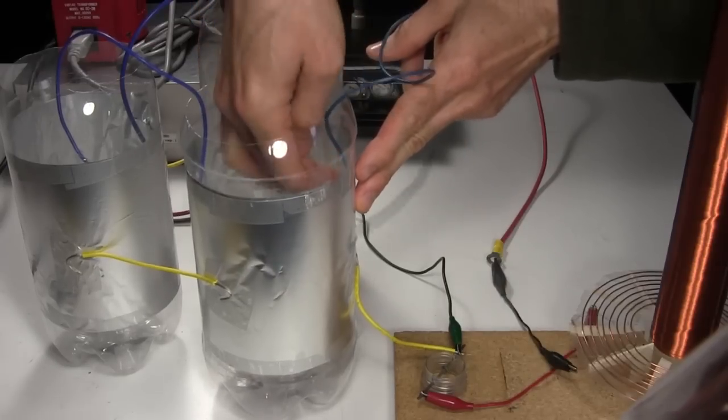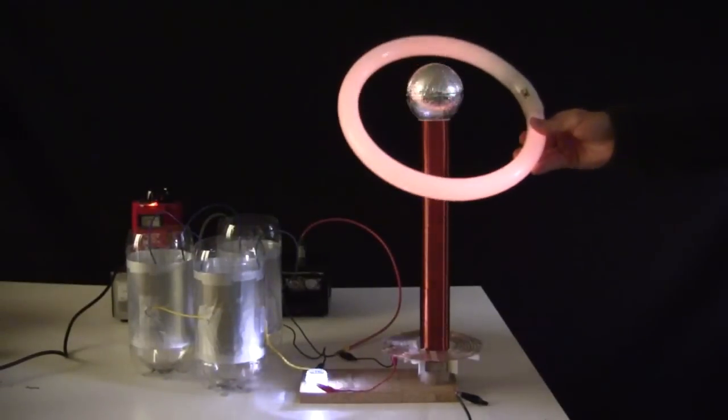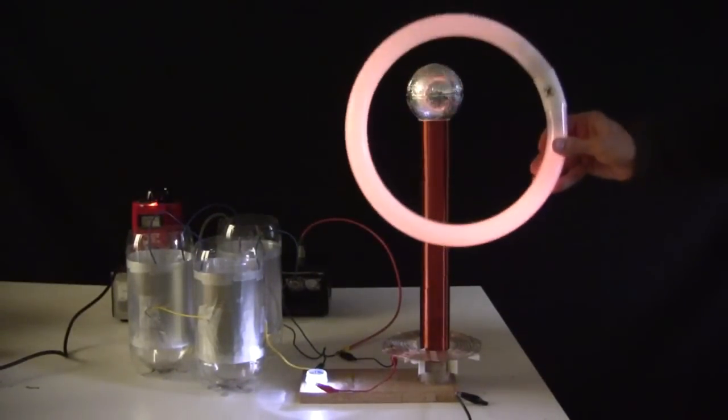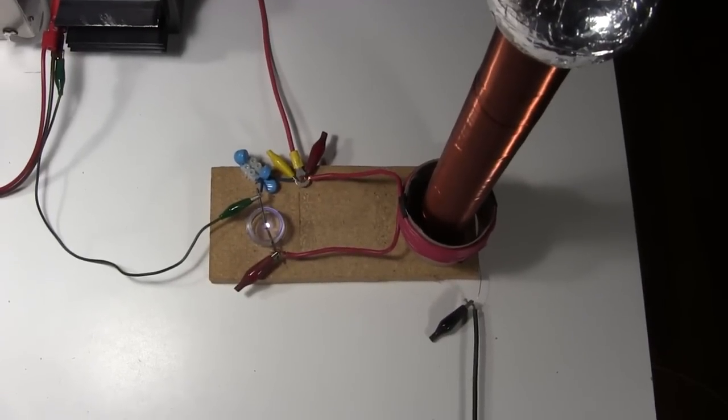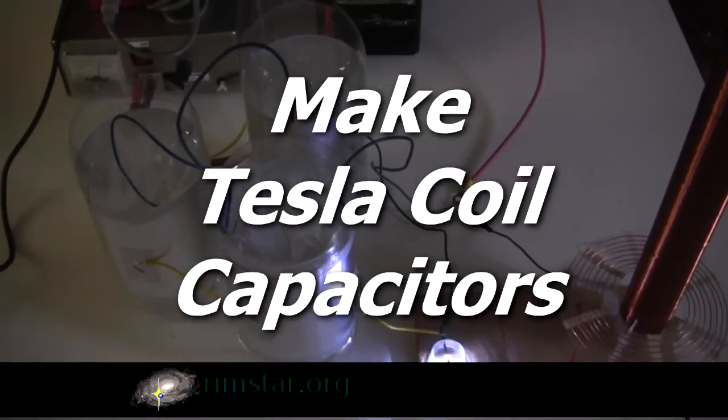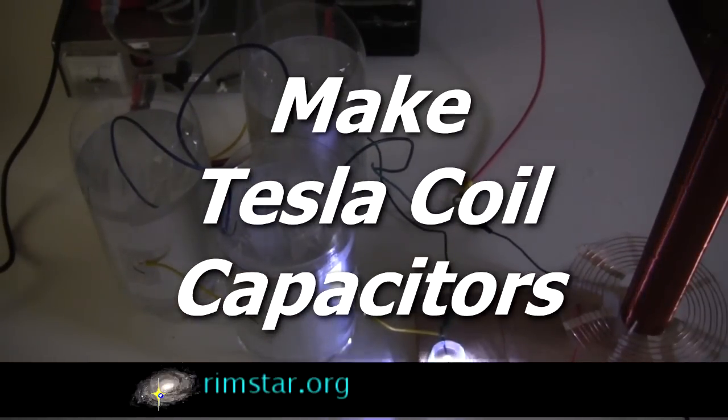Hi gang! I'm going to show you how to make simple high voltage capacitors for this small spark gap Tesla coil. Previously I'd used commercially made ones, but those aren't available to everyone. So I came up with these easy to make ones instead. You might also know them as Leiden jars.